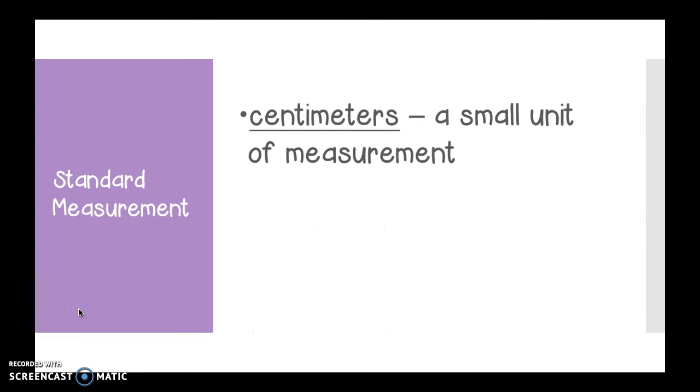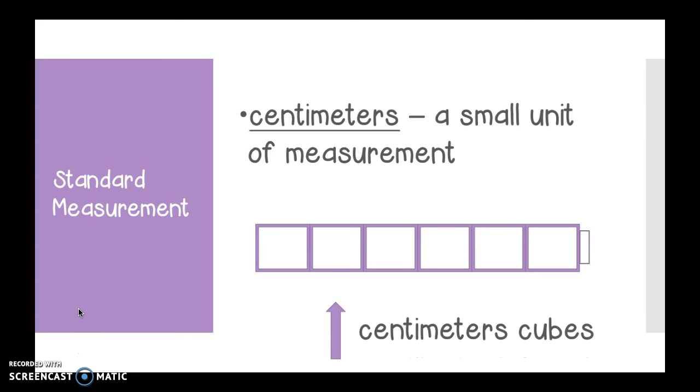They're called centimeters. Go ahead and say the word centimeters. Yeah, centimeters is a small unit of measurement. When we're measuring centimeters we're going to use a centimeter cube stick. This is kind of what it looks like. These are called centimeter cubes. Each little cube is the length of one centimeter. When you put them all together you can measure different objects to see how big they are in centimeters.